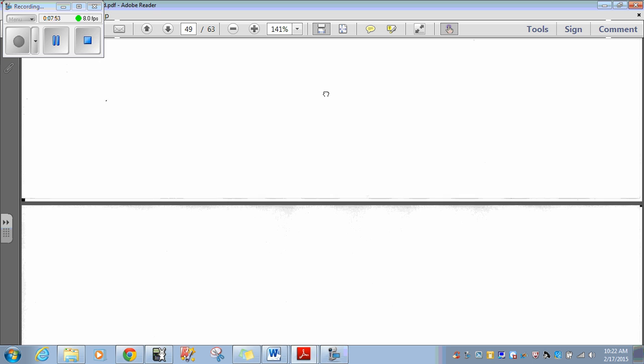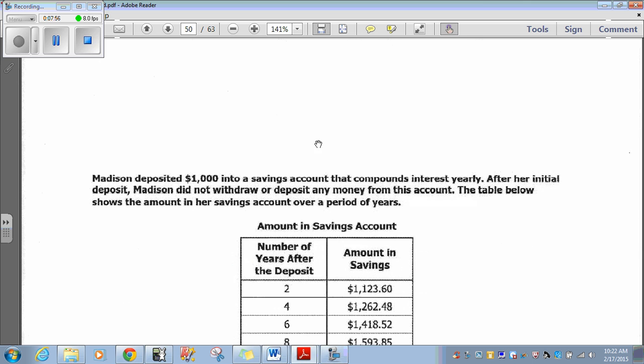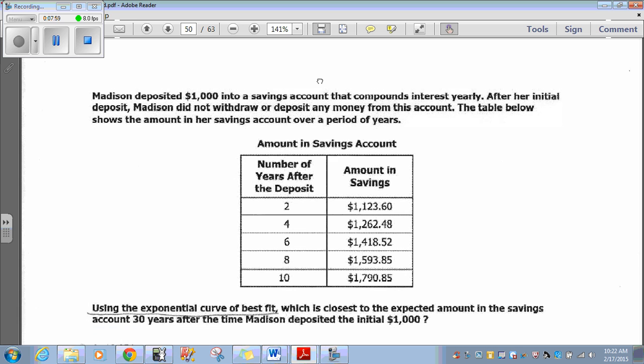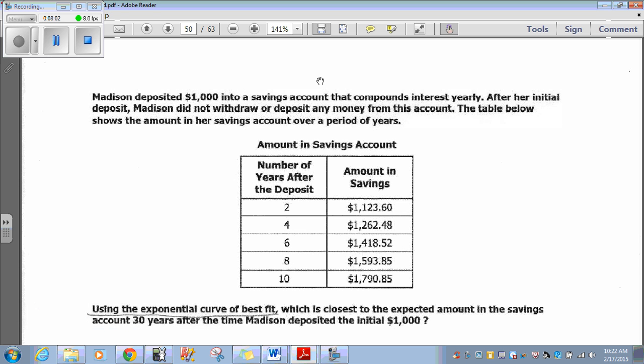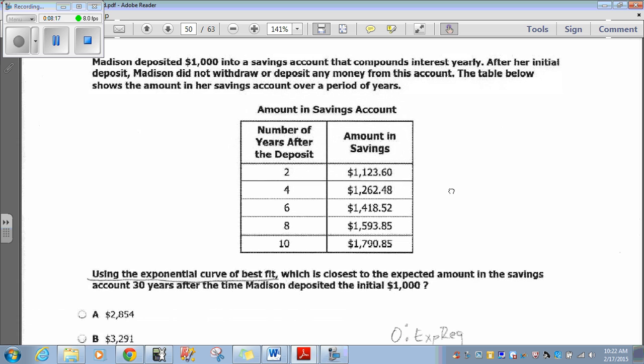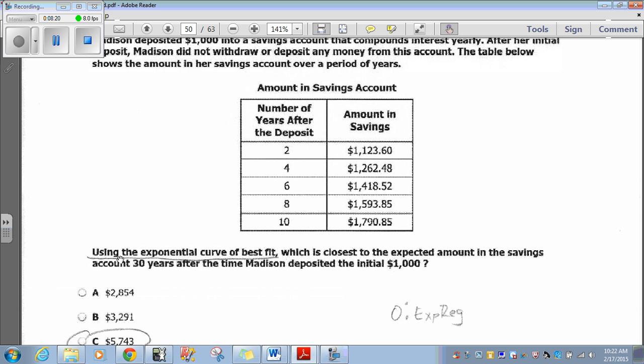Question 46. Madison deposited $1,000 into a savings account that compounds interest yearly. After her initial deposit, Madison did not withdraw or deposit any money from this account. The table below shows the amount in her savings account over a period of years. Using the exponential curve of best fit, which is closest to the expected amount in the savings account 30 years after the time Madison deposited the initial $1,000.